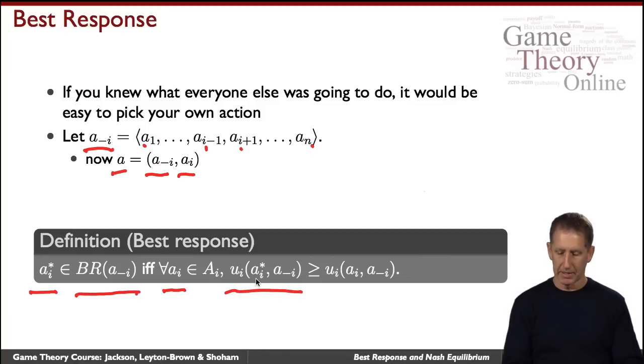it's got to be the case that your utility for playing that, in other words, when you're playing a_i star and the others are playing A_{-i}, for whatever it is, has got to be at least as great as anything else you might choose, a_i. If that's the case, we'll say that a_i star is a best response.